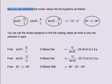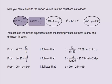Now you can substitute the known values into the equations as follows: sine 25 equals 12 divided by c; cosine 25 equals b divided by c; tangent 25 equals 12 divided by b; c squared equals 12 squared plus b squared; and 25 degrees plus phi equals 90 degrees.